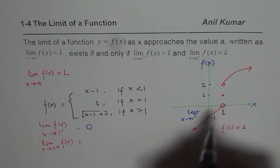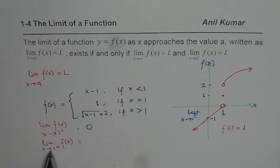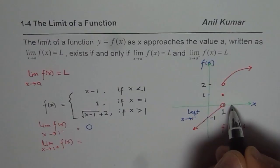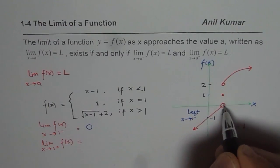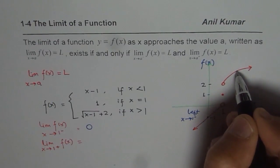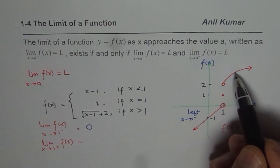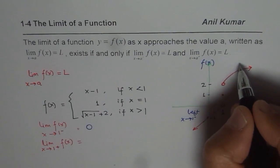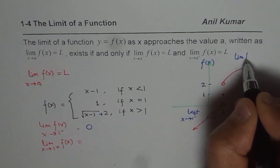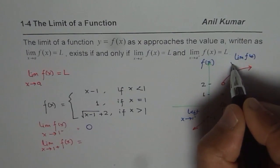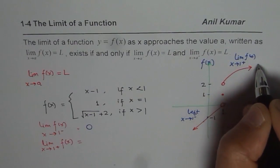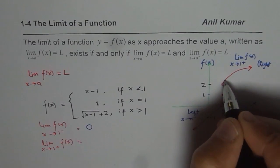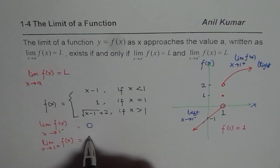On the other hand, when the limit of f of x has x approaching 1 from the positive side — meaning x is greater than 1, it could be 2, 3, or 1.1 — let's say x is 2, the value is somewhere on the square root curve. As you come closer and closer to 1, the value you are approaching is 2. So the right-hand limit of f of x as x approaches 1 from the positive side is 2.